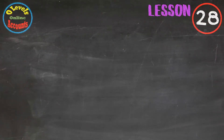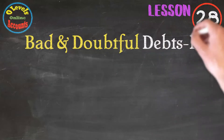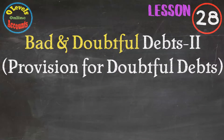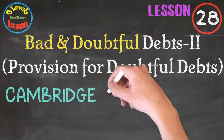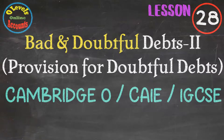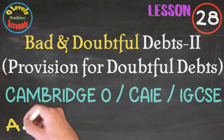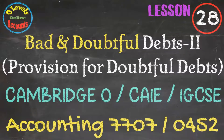Hi students! O Levels Online presents the video lecture series for adjustments for financial statements. In this video, we will discuss the provision for doubtful debts. This video series is helpful for students appearing in Cambridge O Levels upcoming exams, either in June or November, through CAIE or IGCSE for accounting 7707 or 0452. Let's begin the lesson material.